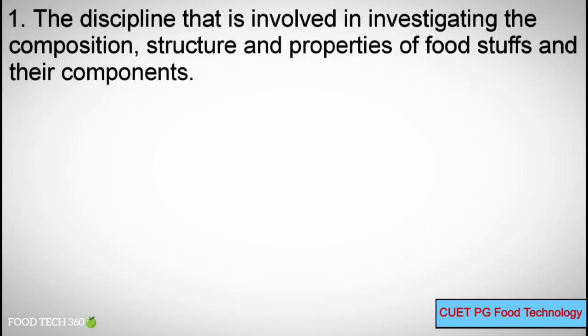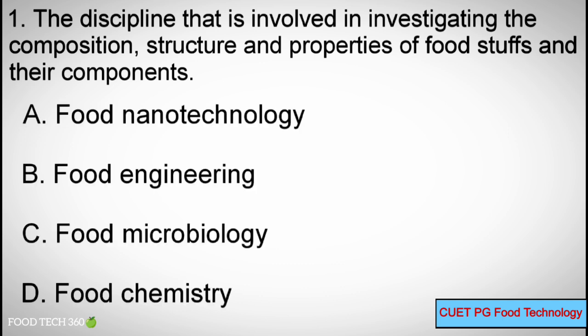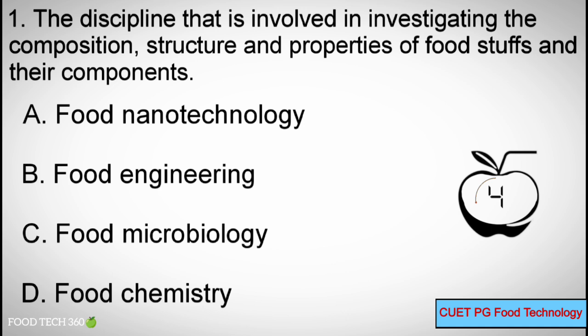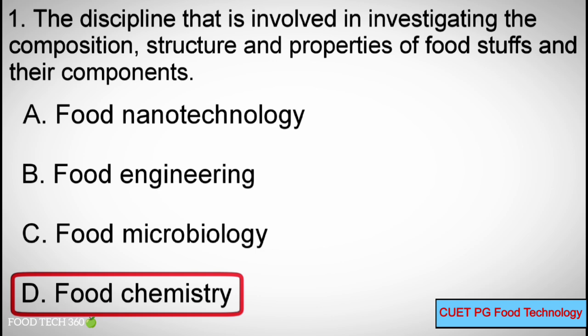Question number 1. The discipline that is involved in investigating the composition, structure and properties of foodstuffs and their components. Options: A. Food Nanotechnology, B. Food Engineering, C. Food Microbiology, D. Food Chemistry. Correct answer: D. Food Chemistry.